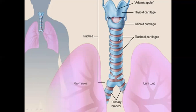These tracheal cartilages support the trachea so that it does not collapse when wind or air moves through it. They also provide flexibility to the trachea. And as I mentioned, the trachea bifurcates into the right lung and left lung — this is the primary bronchus.